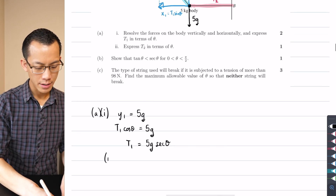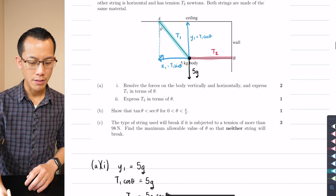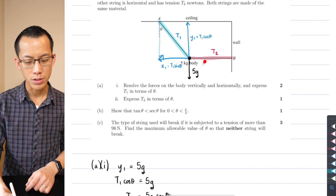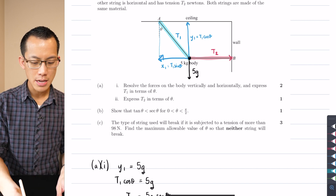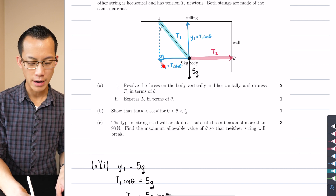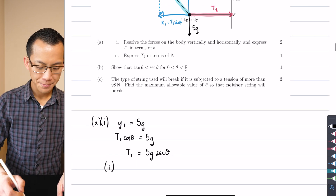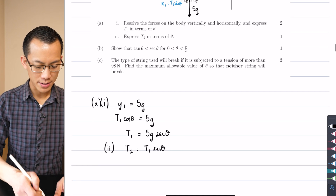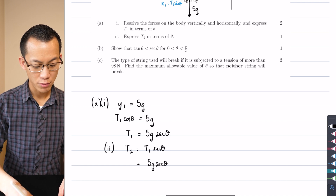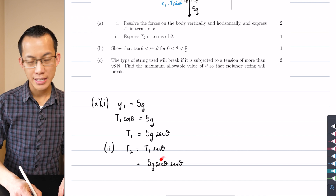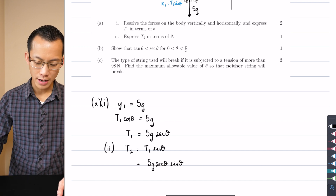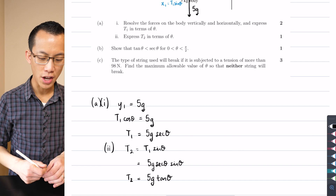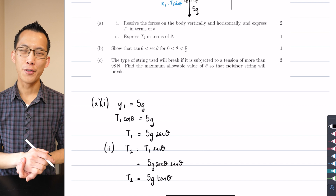Part two says express T2 in terms of theta. T2 initially doesn't seem to have anything to do with theta, but just like I equated vertical forces, I can do the same thing horizontally. T2, pulling in the right direction, has to equal x1, which is pulling in the leftward direction. I already have an expression: x1 equals T1 sin theta. So T2 equals T1 sin theta. Substituting T1, that's 5g sec theta times sin theta. Sec theta is shorthand for 1 over cos theta, so this is sin theta over cos theta, which is just tan theta. So T2 equals 5g tan theta.